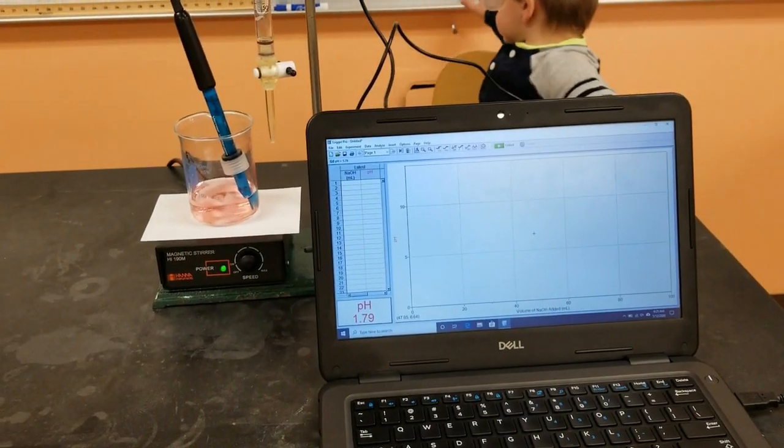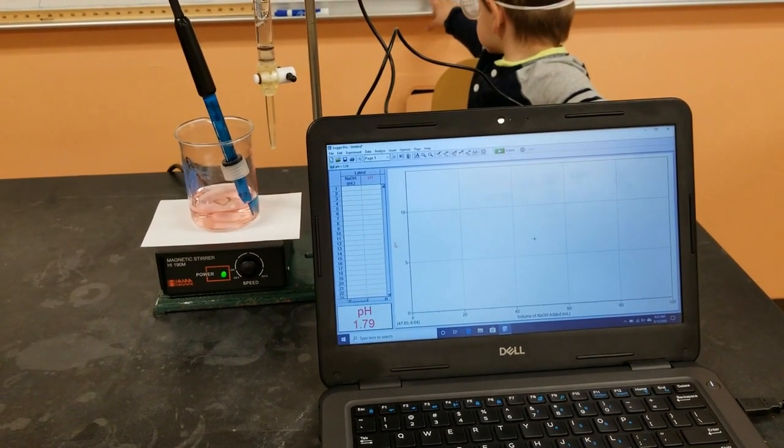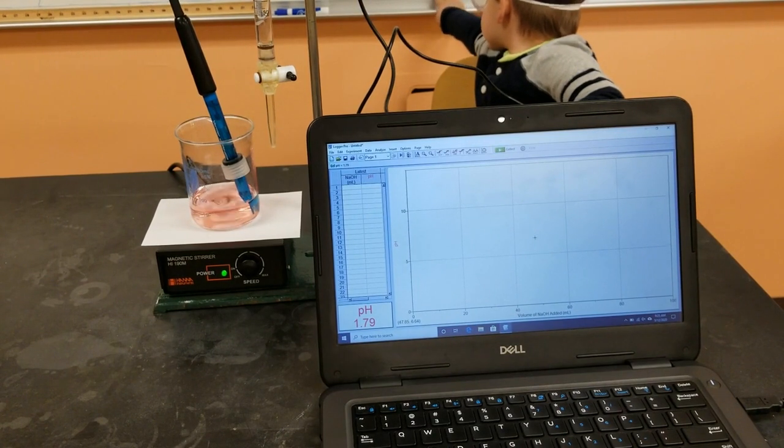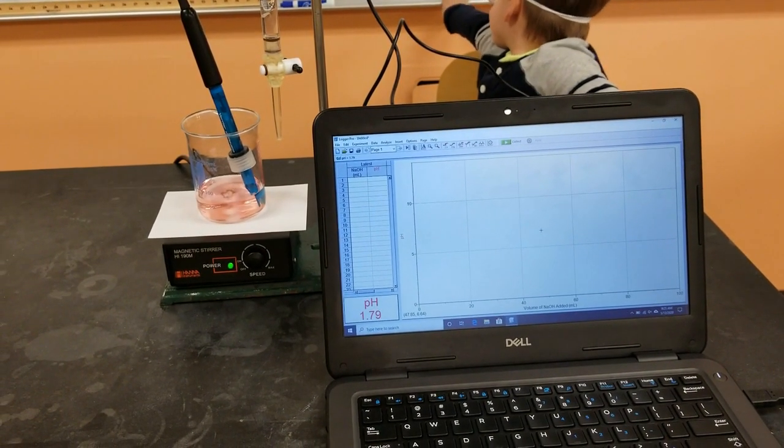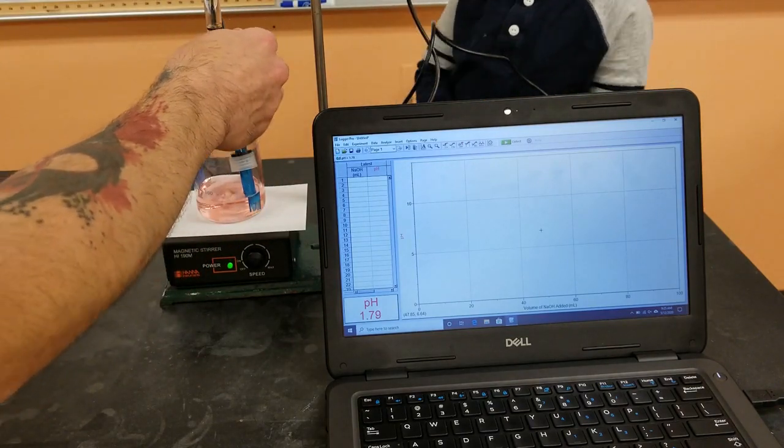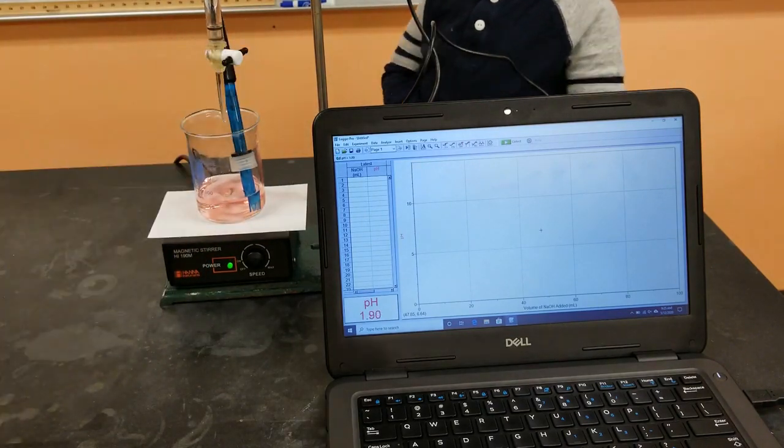And so what I'm going to be doing is adding base, dropping the base until the pH changes by 0.1 or 0.2 each time, and then keeping that point.